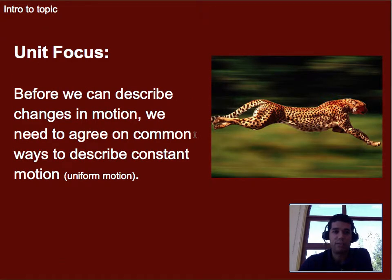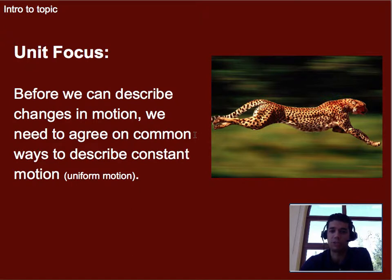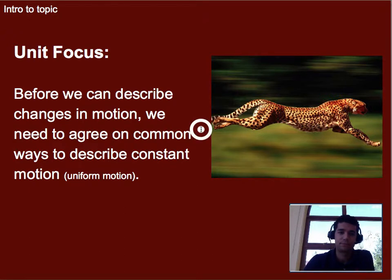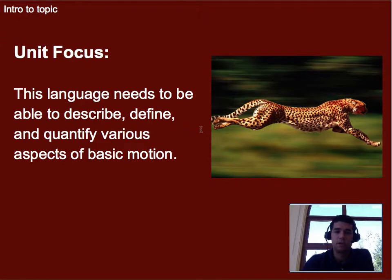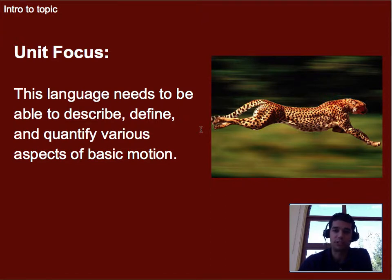So in order to build up to that, we have to start with what our unit talks about, which is really just describing changes in motion. And in order to do that, we need to come to an agreement on common language or words to describe specifically constant motion. This language needs to be able to describe it, define various things, as well as eventually quantify the different aspects of motion, such as where something is or how fast it's moving.